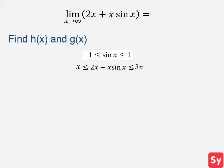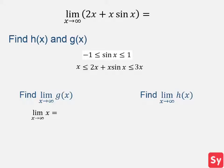Now we'll take the limit of g of x and h of x. First, we'll find the limit of g of x. We have the limit of x as x approaches infinity. We substitute infinity in for x and get infinity as the limit. Now we'll find the limit of h of x. We have the limit of 3x as x approaches infinity. We substitute infinity in for x and get infinity as the limit. Because the limit of g of x as x approaches infinity equals the limit of h of x as x approaches infinity, then the limit of f of x as x approaches infinity also equals this limit. So infinity is the answer.